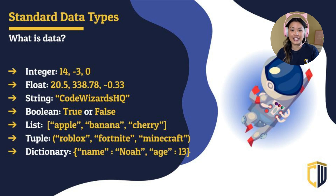So the first one is going to be an integer. Second is a float. We've got a string, a Boolean — that one's a little bit weird — a list, a tuple, and a dictionary. You can see here some examples of each of these different kinds of data.